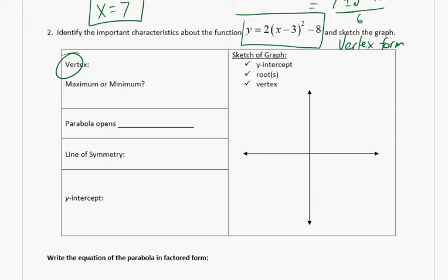Is it a minimum or a maximum? It's a minimum because this is going to be up like a cup. It's going to be up like a cup because this number is positive. So the vertex is a minimum. So parabola opens up. Up like a cup. Line of symmetry? X equals 3. It might help to graph it first. So we've got 3 negative 8. This is the vertex. 3 comma negative 8.